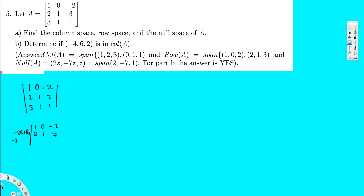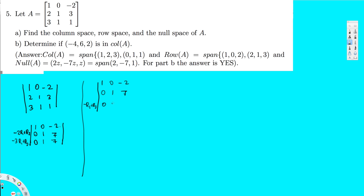For the third row, I can multiply by minus 3 R1 and add it to R3, which gives us 0. Then 0 plus 1 is 1, and minus 3 times minus 2 is plus 6, plus 6 plus 1 is 7. The second and third rows are the same, so we can eliminate one of them. This leaves us with: 1, 0, minus 2 and 0, 1, 7. Then negative R2 plus R3 gives us 0, 0, 0.